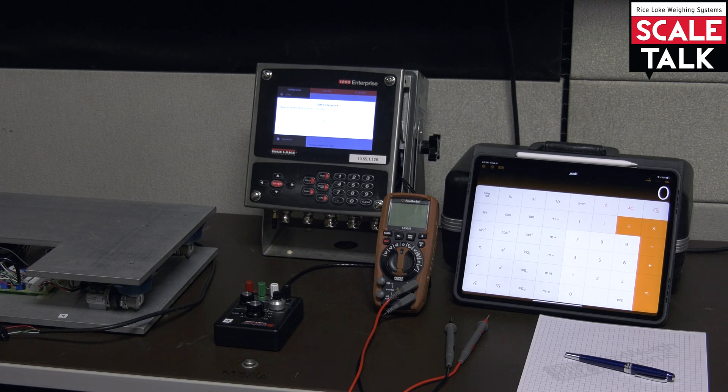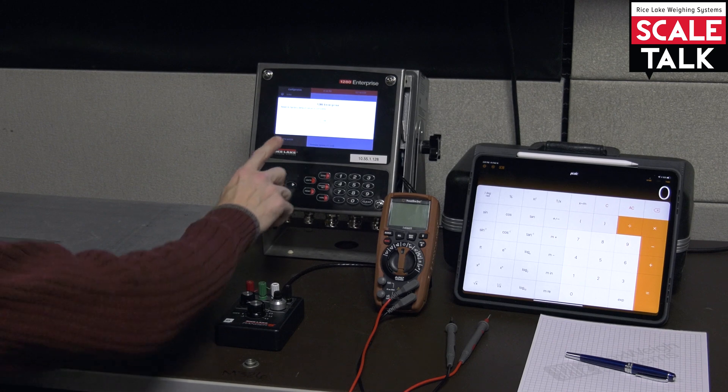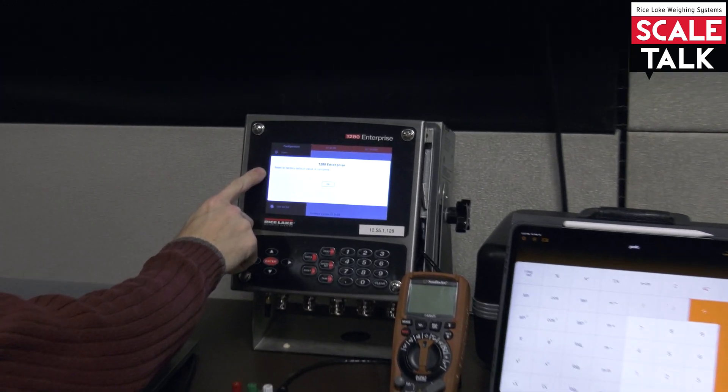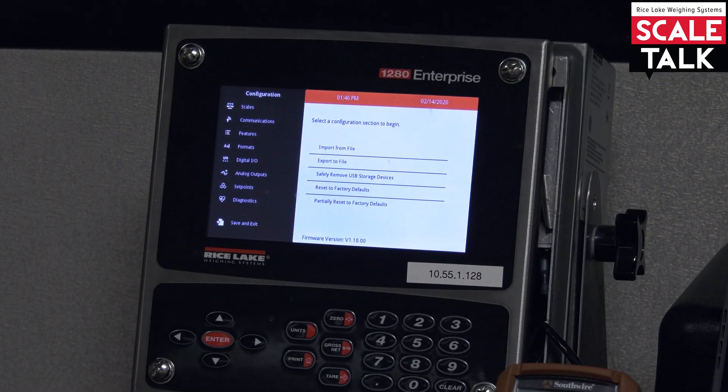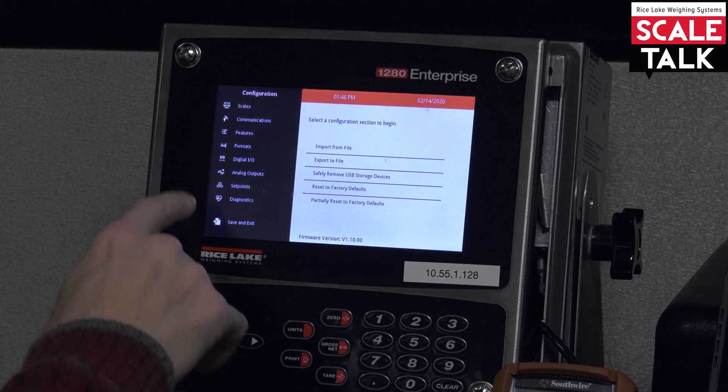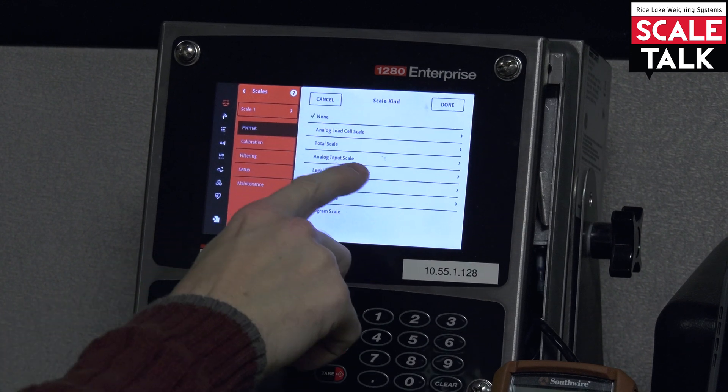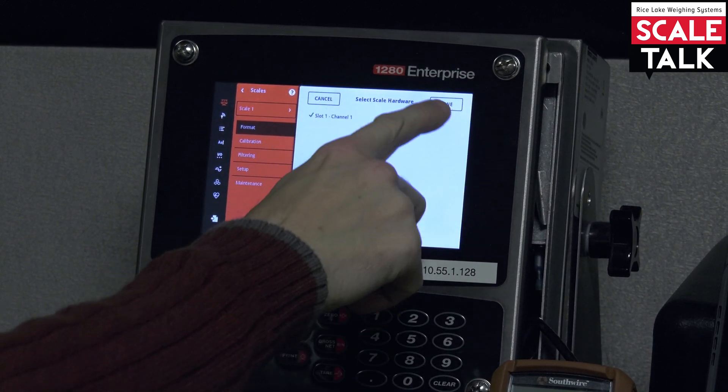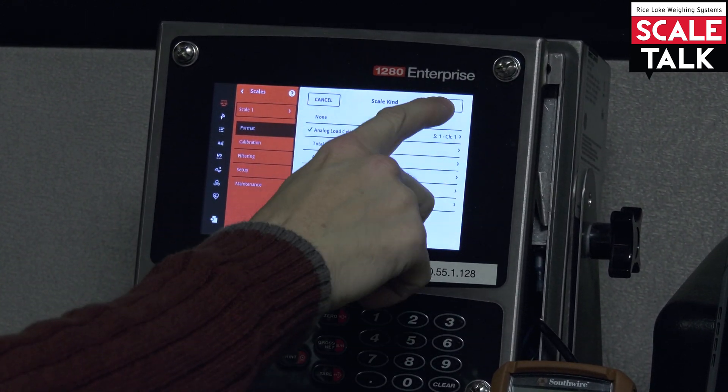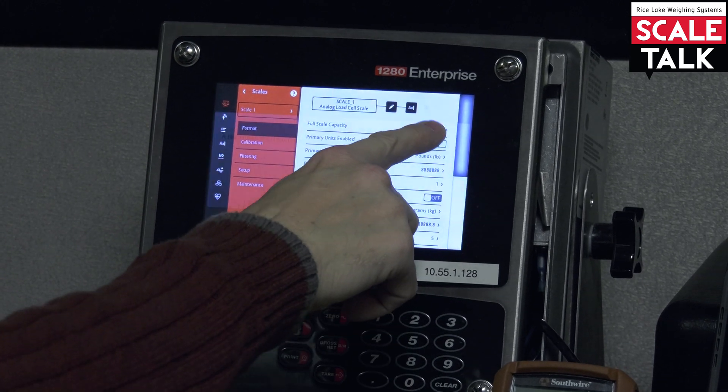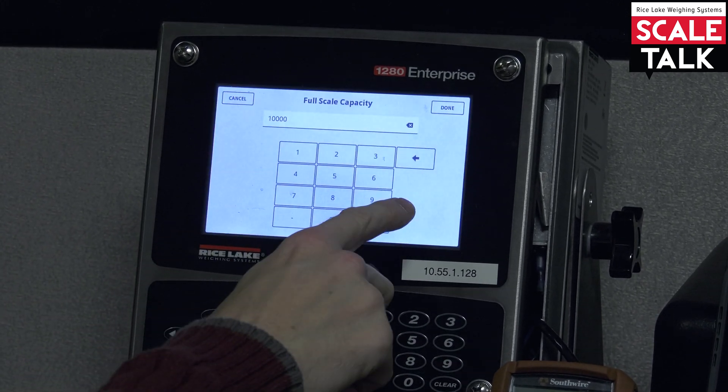So what we've got here, let's go through this. We've got our 1280 here and we're going to start at a default situation just so we know that it's not currently calibrated. That means we'll have to go in and set up our scale. This is going to be a 50 pound scale.